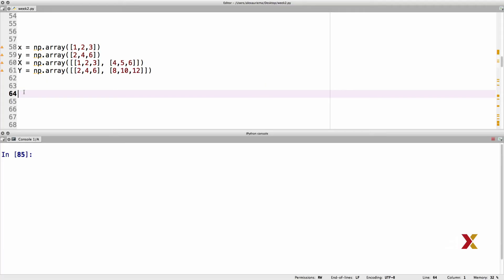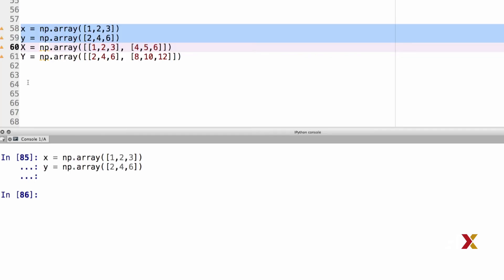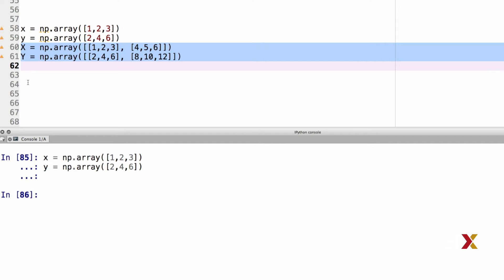Let's then do some practice. I'm first going to define two one-dimensional arrays called lowercase x and lowercase y, and I'm also going to define two two-dimensional arrays, and I'm going to denote them with capital X and capital Y.